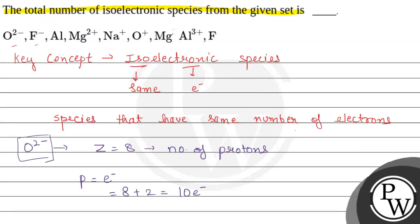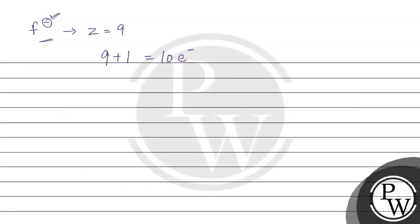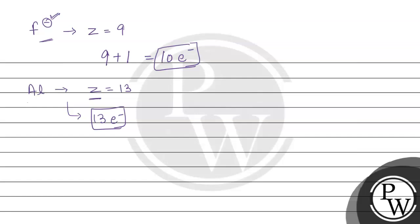The next species given is aluminium, which is neutral. For aluminium, the atomic number is 13. Since it is a neutral species, the number of protons and number of electrons will be the same, equal to the atomic number Z. Hence the number of electrons in aluminium is 13 electrons.